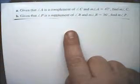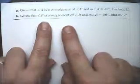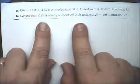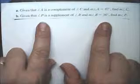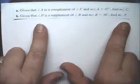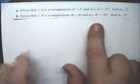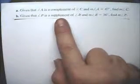Part A says that angle A is a complement of angle C, and angle A is 47, so we have to find C. So A plus C, because it's complementary,